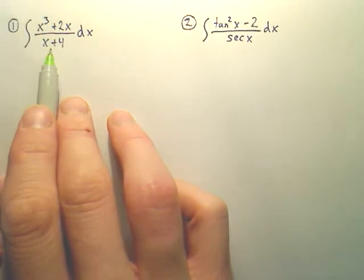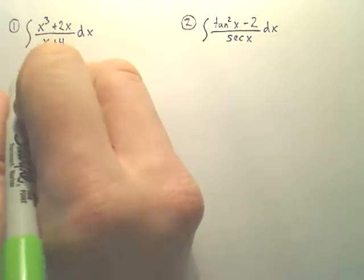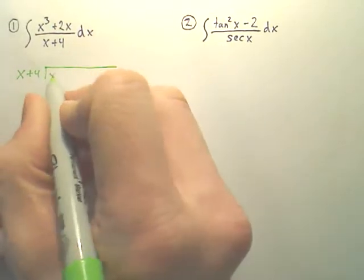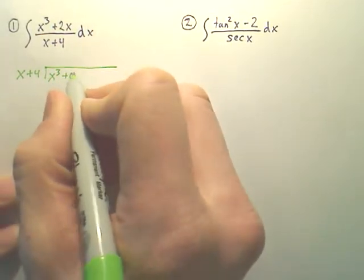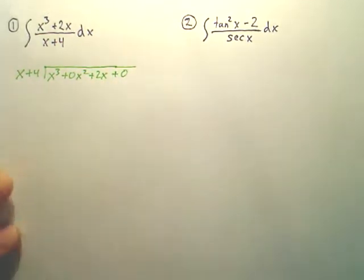So the next step is something called long division. So what you do is you take x plus 4 and you're long dividing. Now you need 0x squared plus 2x plus 0. You have to long divide to do this one.